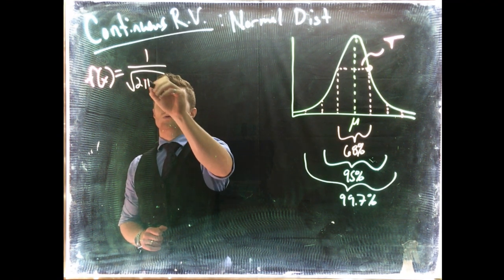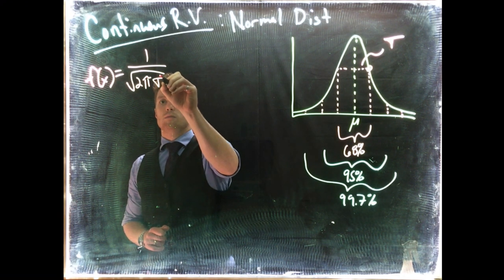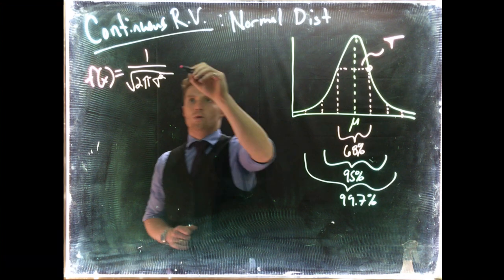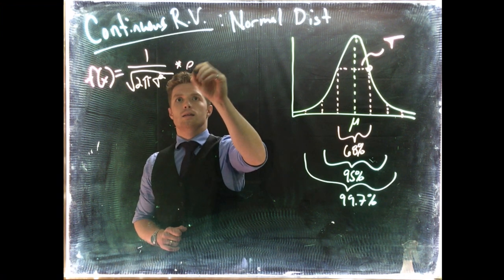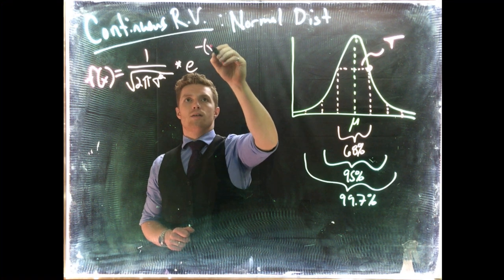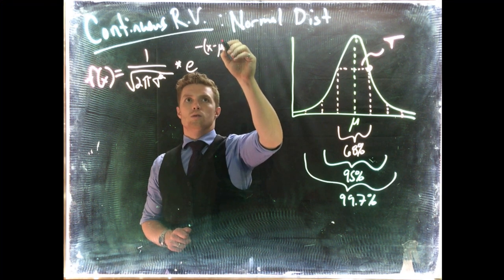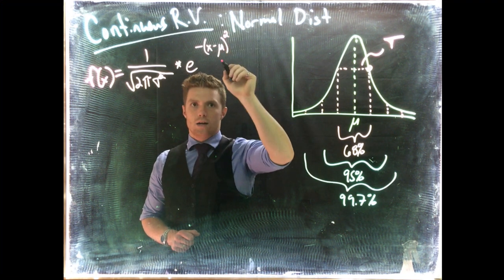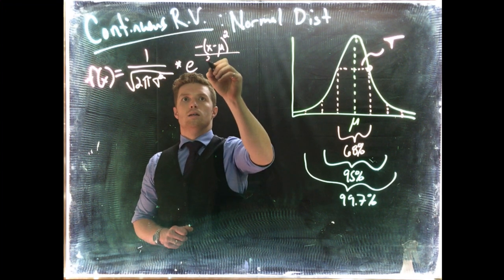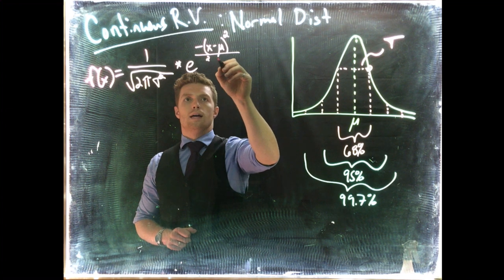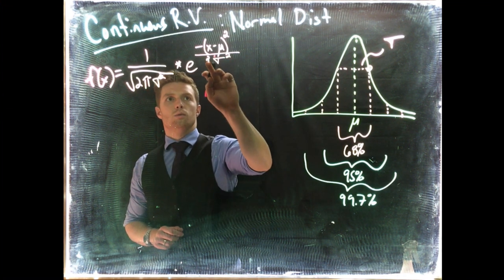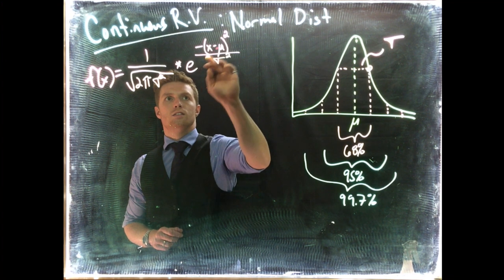Our f(x) is equal to 1 divided by the square root of 2π times sigma squared, multiplied by e raised to the power of negative (x minus mu) squared